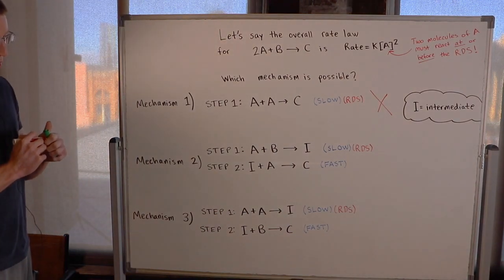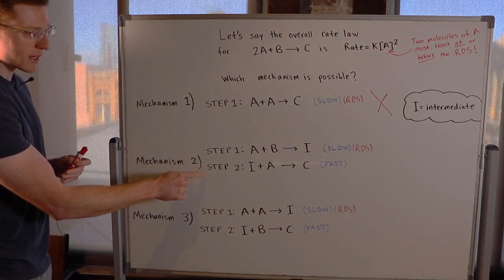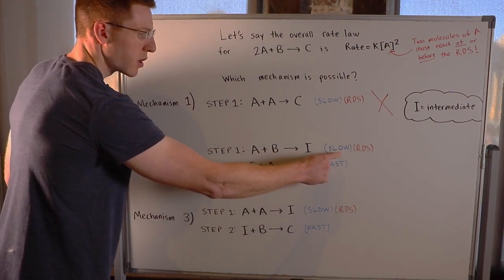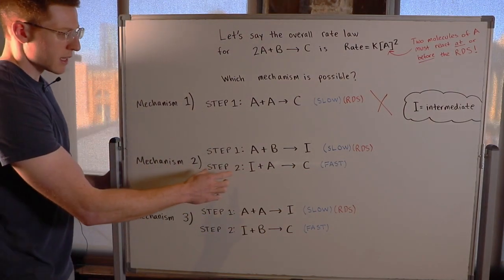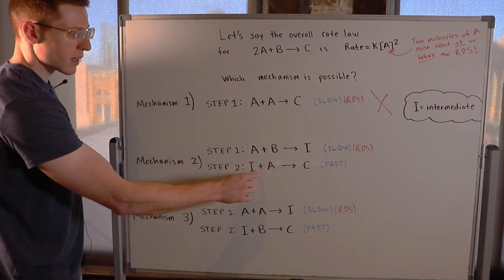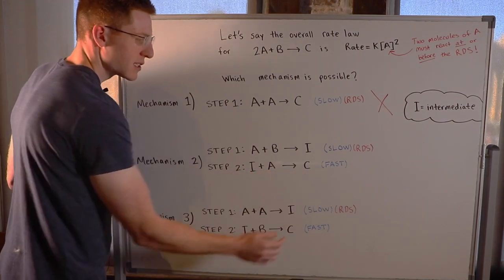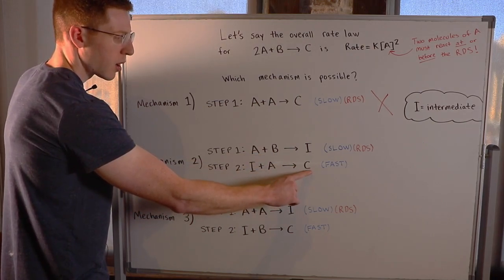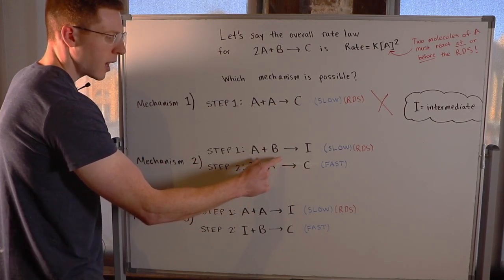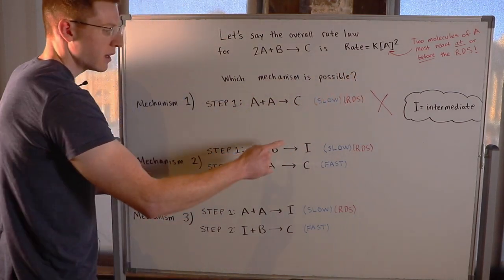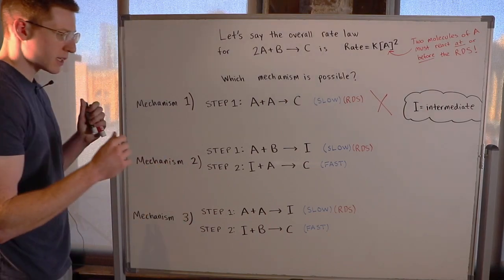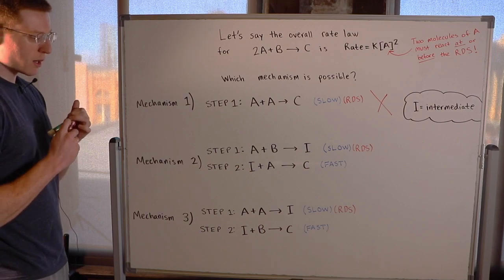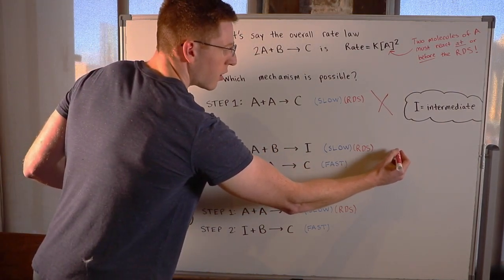What about mechanism two? In mechanism two we have a two-step mechanism where A plus B react to make an intermediate in the slow step, which means it's the rate determining step. Then in step two, that intermediate reacts with A to make C in a fast step. We do see A and B as reactants making C as the product. But the problem is we don't have two molecules of A reacting at the slow or rate determining step — only one molecule of A reacts with a molecule of B. Therefore, mechanism two is also not possible.